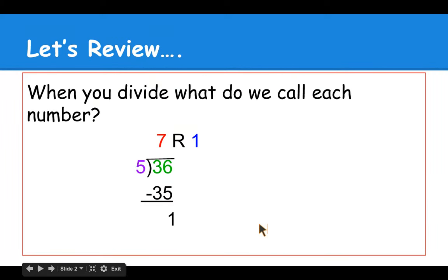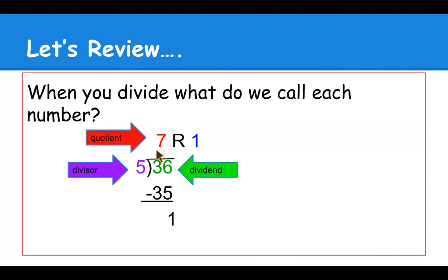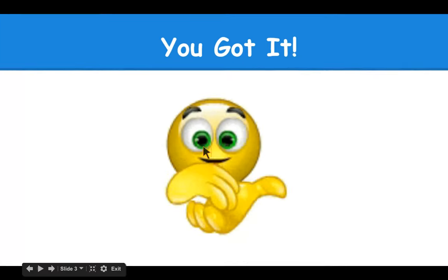Let's review what we already know. When we divide, what do we call each number? The number on the outside that we're dividing by is known as the divisor. The number on the inside that we're dividing into is the dividend. Our answer is called the quotient and the leftover is known as the remainder.